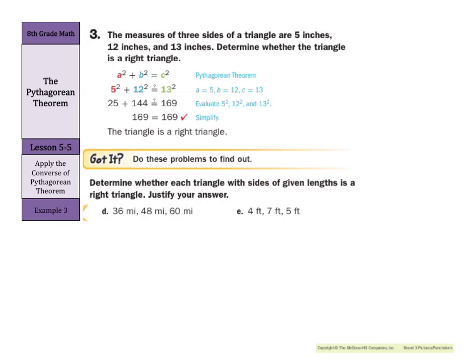In our guided example, the measures of three sides of a triangle are 5 inches, 12 inches, and 13 inches. Determine whether the triangle is a right triangle. If we can prove A squared plus B squared equals C squared, then it is a right triangle. We substitute the two smaller sides, 5 and 12, for A and B, and our largest side 13 for C. 5 squared is 25, 12 squared is 144, 13 squared is 169. 25 plus 144 equals 169 — so 169 equals 169, and we have a right triangle.